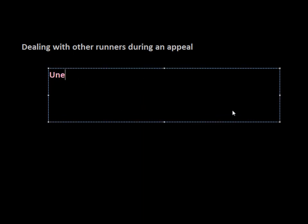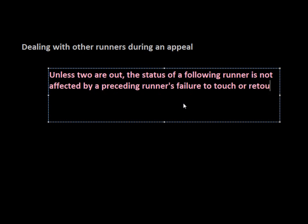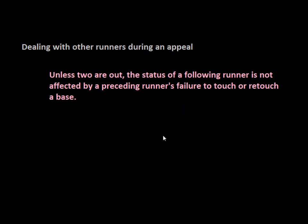This rule is broken up into three parts. The first part states that unless two are out, the status of a following runner is not affected by a preceding runner's failure to touch a base, or to retouch if they have to retrace their steps and go back to a previous base. So there is no effect to that runner in that situation.